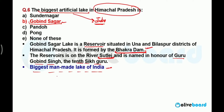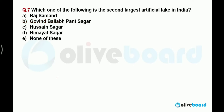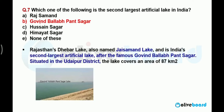Moving to the next question: which of the following is the second largest artificial lake in India? The names are a little bit similar — Gobind Sagar Lake and Govind Vallabh Pant Sagar Lake. Govind Vallabh Pant Sagar Lake is also known as Dhebar Lake or Jaisamand Lake — three names for the same lake. It is the second largest artificial lake in India, situated in Udaipur district of Rajasthan.